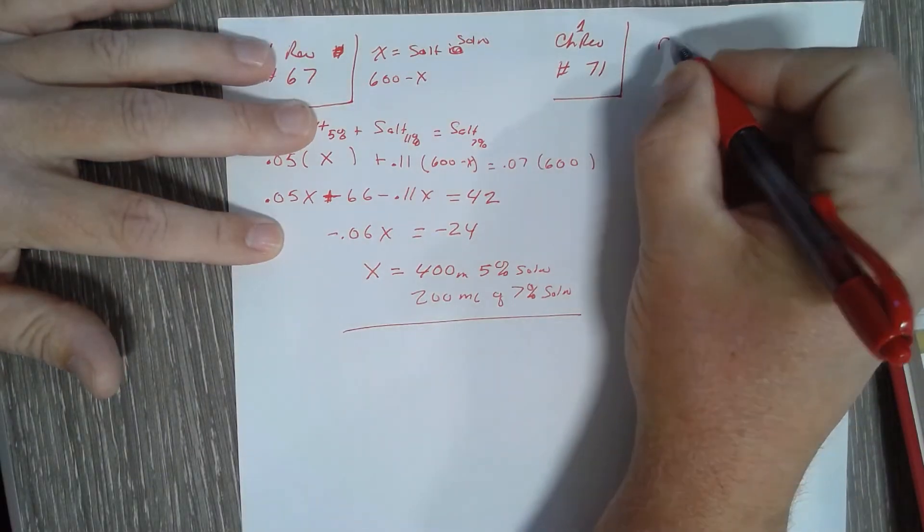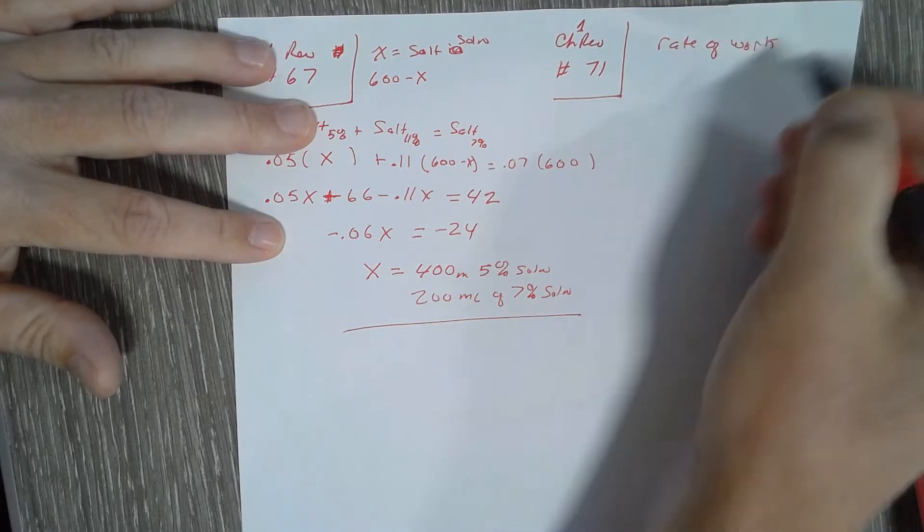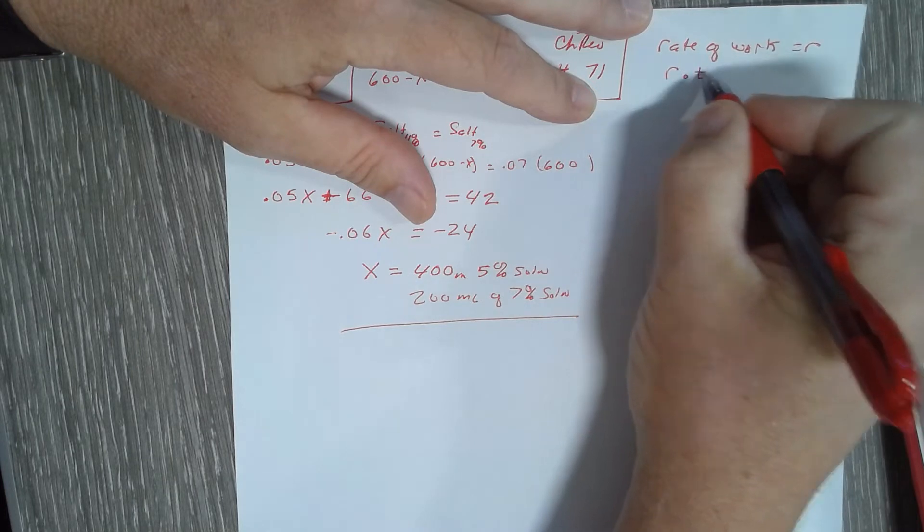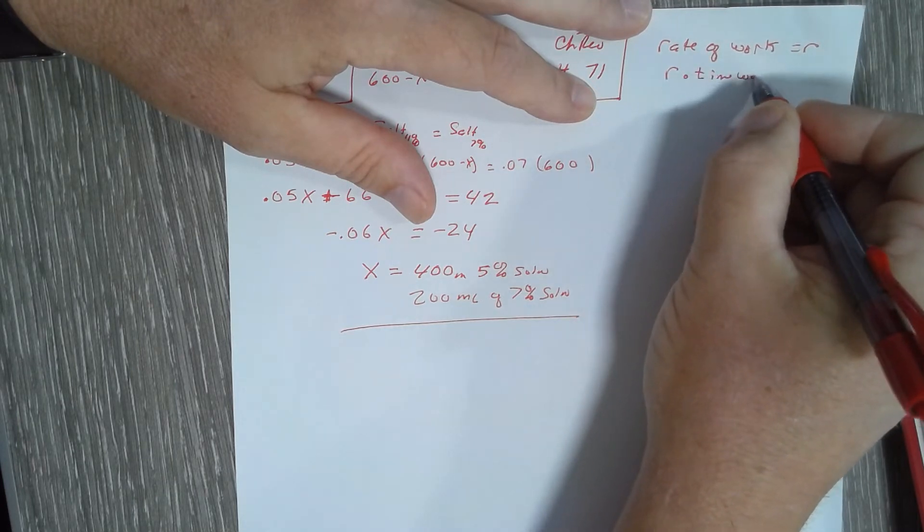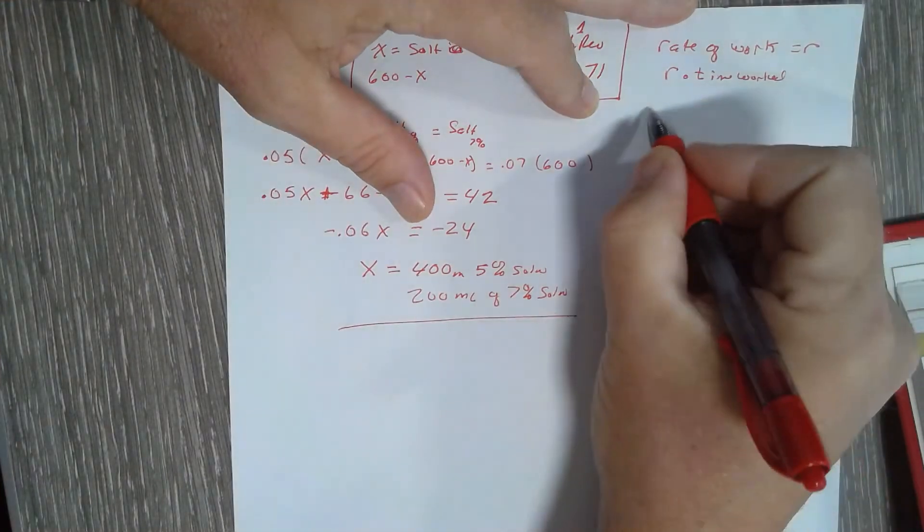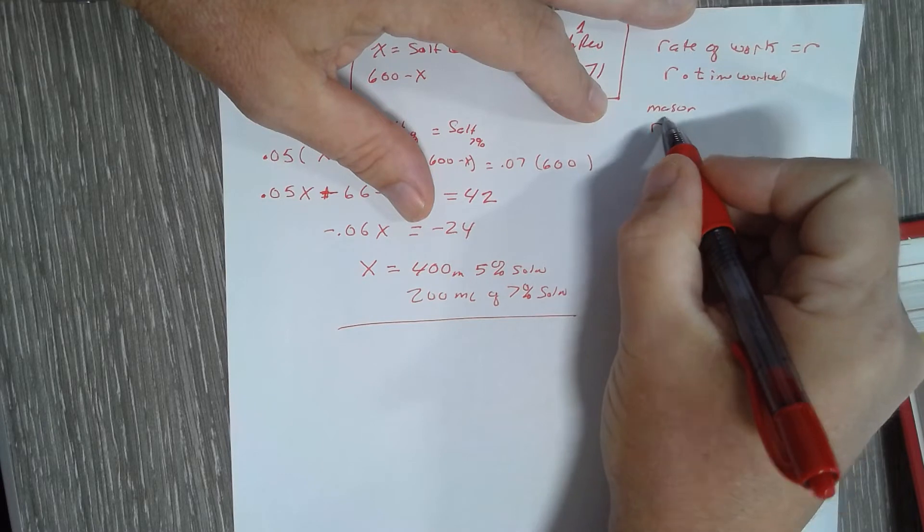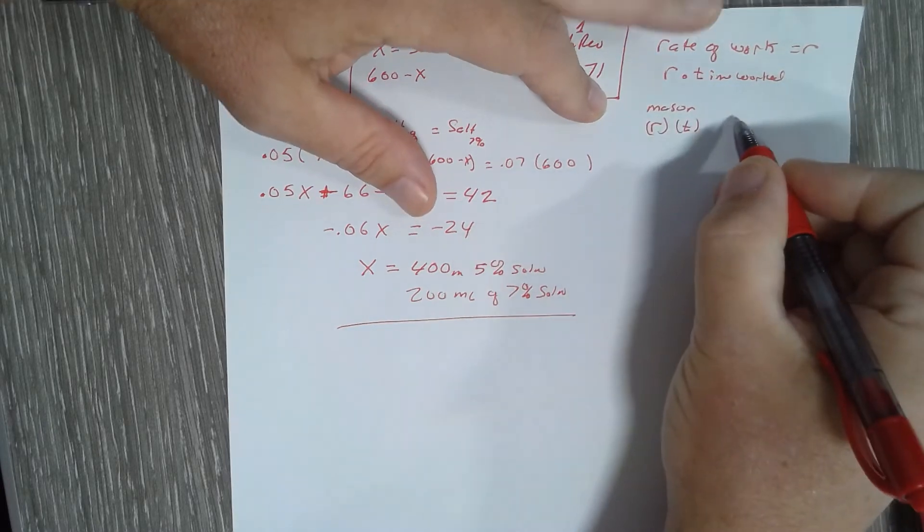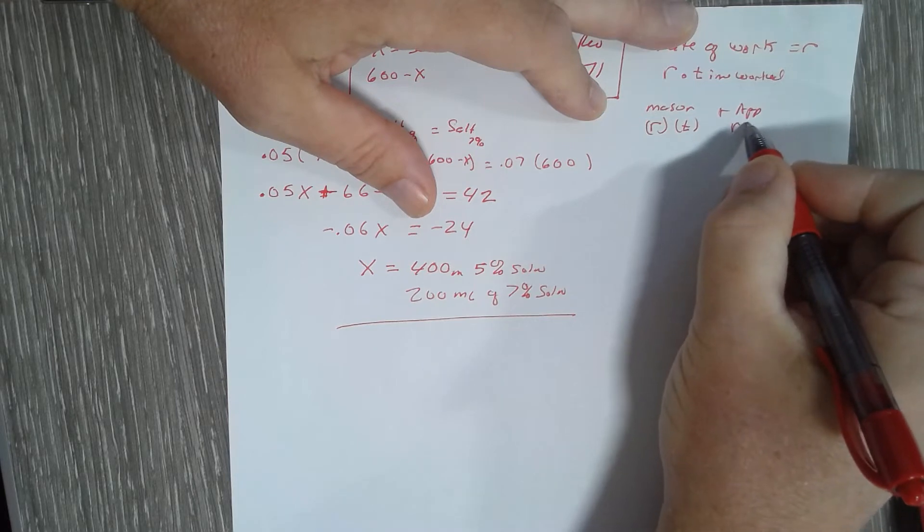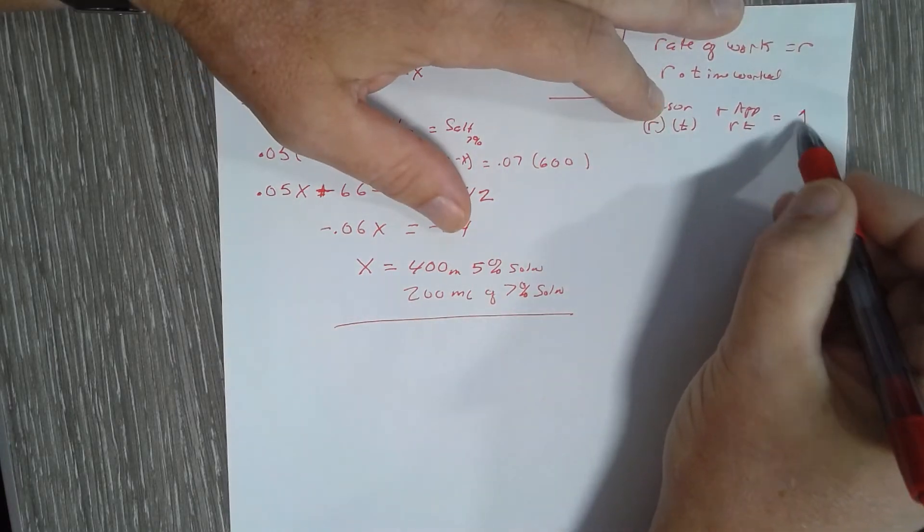What I need here is each person's rate. I take the rate of work times the time worked, and that's how much of the job they get done. So for the mason I need his rate and his time. For the apprentice I need his rate and his time. And then they're going to finish with one job.